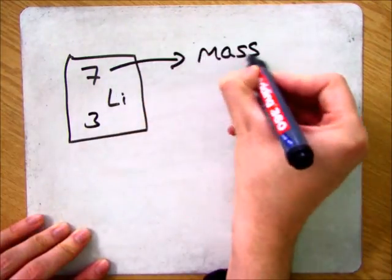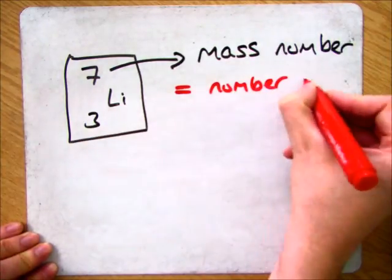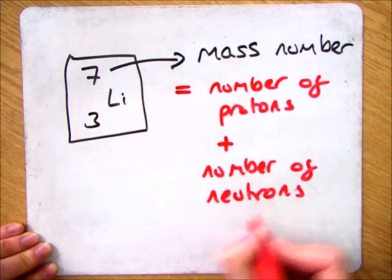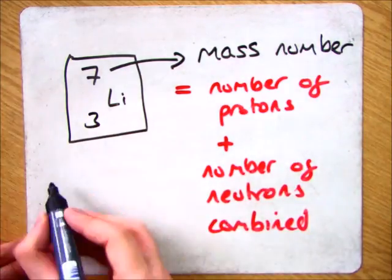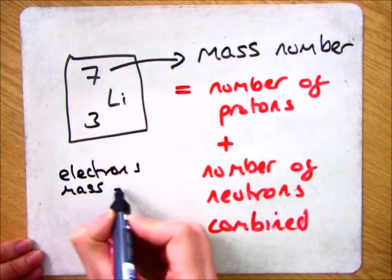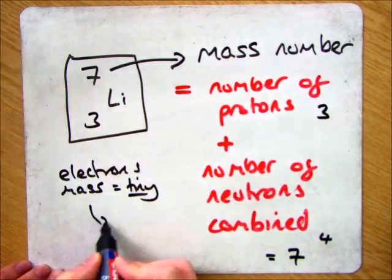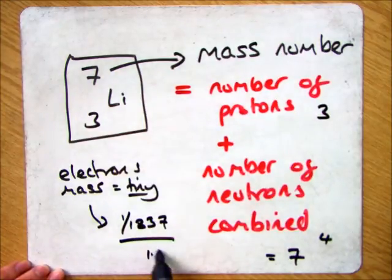So in summary then, if we have a look at the atom lithium, you have your mass number at the top and that is the number of protons and the number of neutrons added together. Remembering that the electrons have a tiny mass of 1 divided by 1837 which is effectively 0. So we have 3 protons and 4 neutrons which gives us a combined mass of 7 which makes up the mass number.